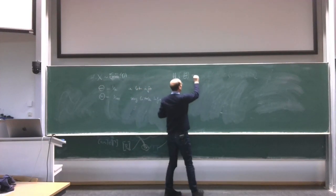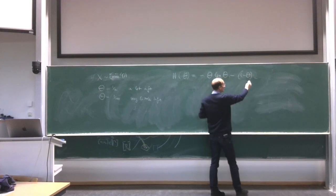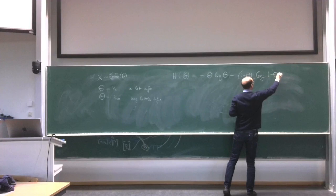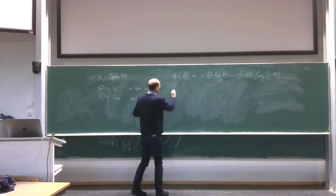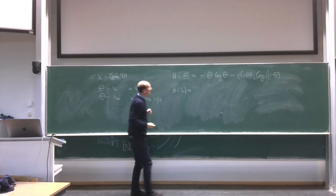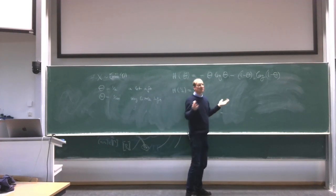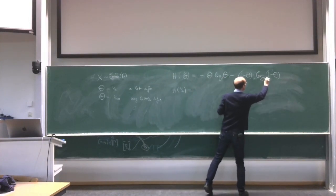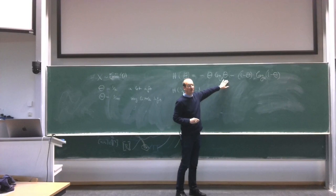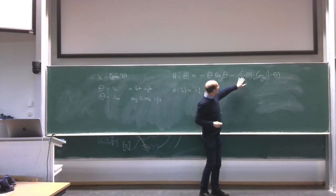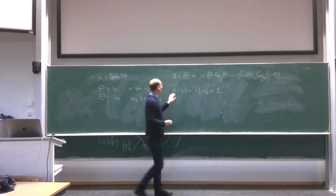Let's write down the entropy for a Bernoulli experiment with parameter theta: H(θ) = -θ·log(θ) - (1-θ)·log(1-θ). For theta = 1/2, using log base 2: it's -1/2 · log(1/2) = -1/2 · (-1) = 1/2, and the second term gives another 1/2, so H(1/2) = 1. The natural unit when using log base 2 is bits. So the entropy of a fair coin is exactly 1 bit.